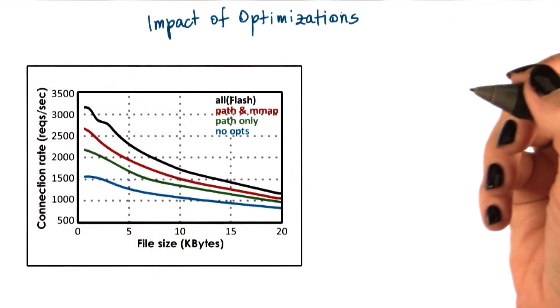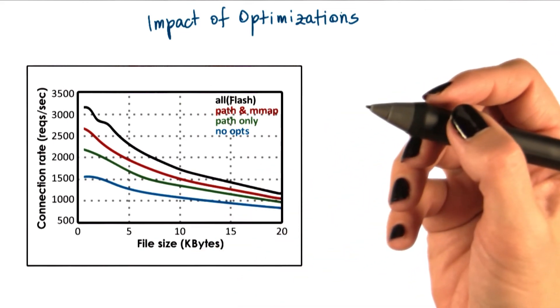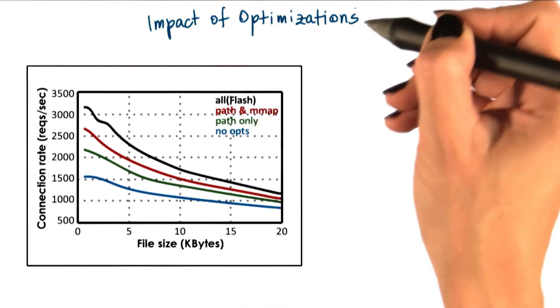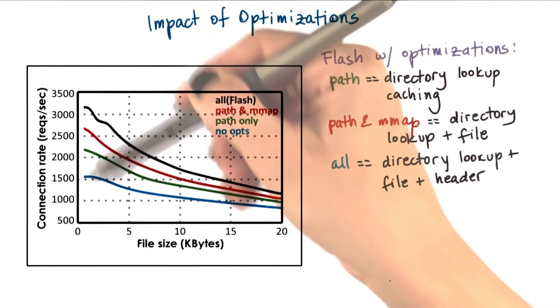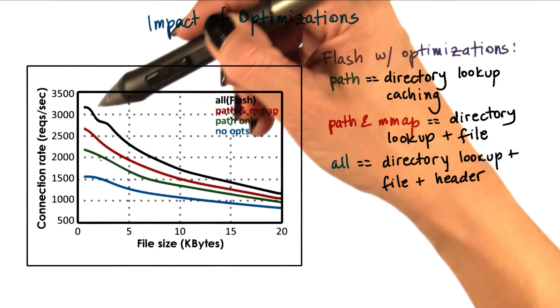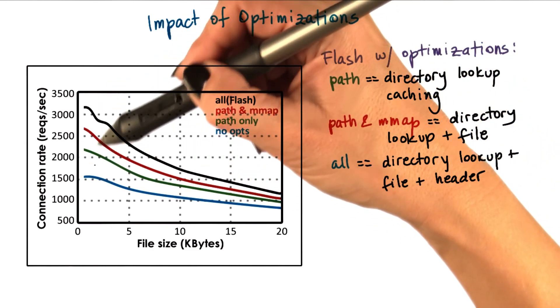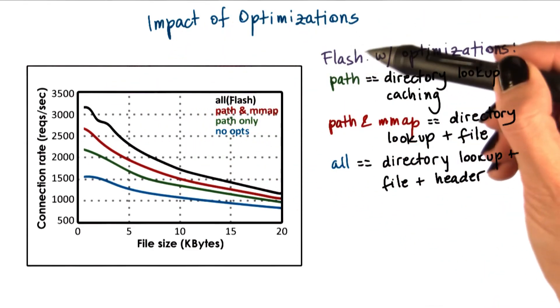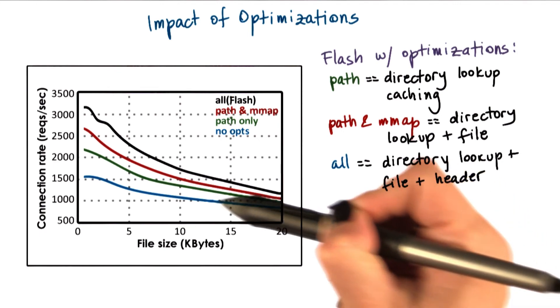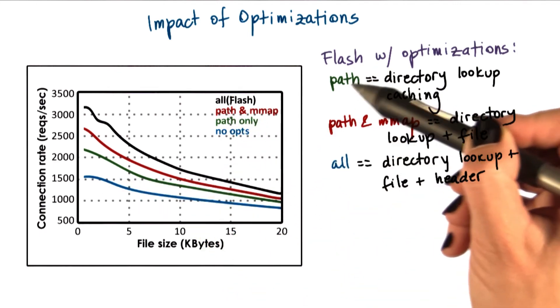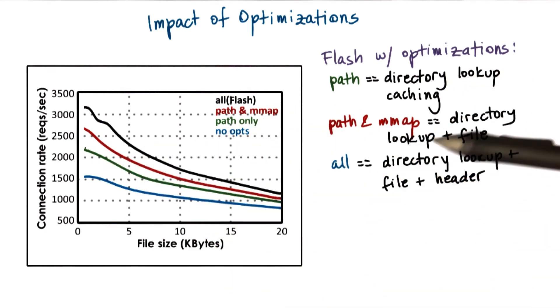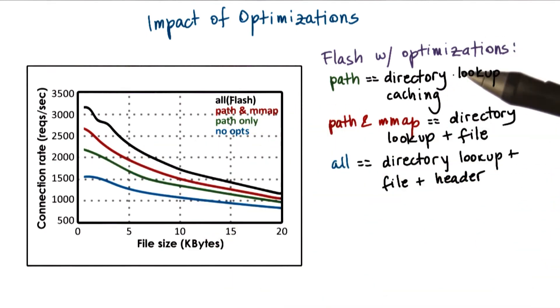In both of those cases, Apache performed worse. So let's try to understand if there's really an impact of the optimizations performed in flash. And here the results represent the different optimizations, the performance that's gathered with flash without any optimizations, that's the bottom line, then flash with the path only optimization. So the path only, that's the directory lookup caching. So that's like the computation caching part.